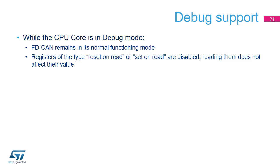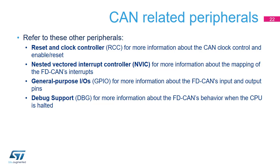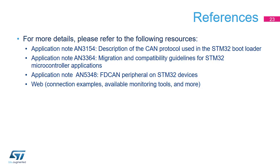For additional information, refer to the training for these peripherals which may affect FDCAN behavior: Reset and Clock Controller (RCC) for more information about the CAN clock control and enable/reset; Interrupts for more information about the mapping of the FDCAN's interrupts; General Purpose IOs (GPIO) for more information about the FDCAN's input and output pins; and Debug support (DBG) for more information about the FDCAN's behavior in debug mode. Application notes covering the CAN topic are available on www.st.com. To learn more about the CAN interface, you can also visit a wide range of webpages discussing the CAN communication protocol and bus monitoring tools. Many digital oscilloscopes support direct reading and analysis of data transmitted over the CAN bus.